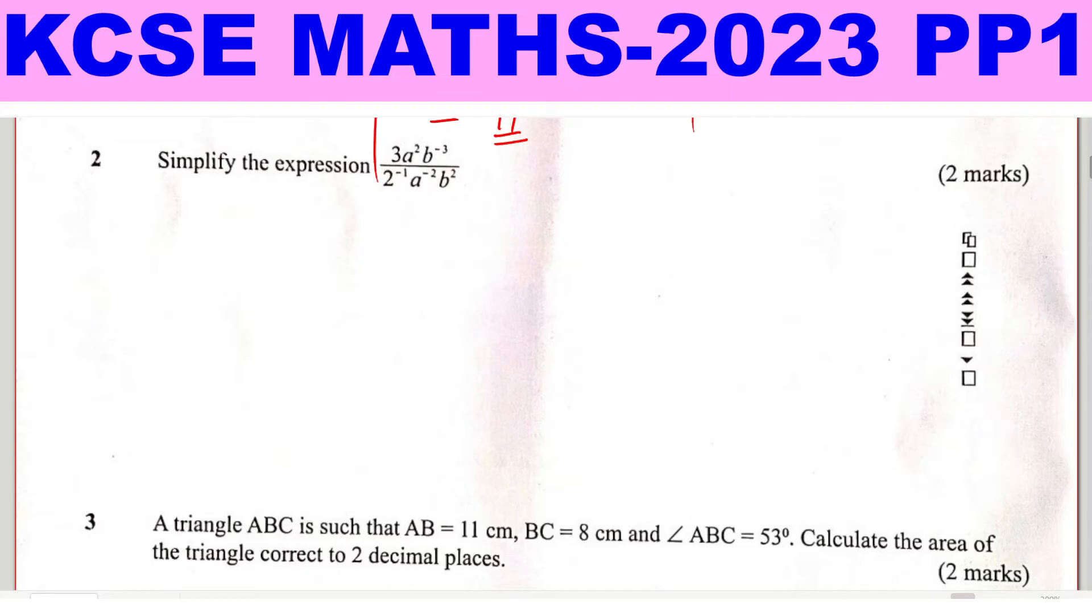And this is how I'm going to split it. For the numerator 3a squared b raised for negative 3, let me split that to have 3 times a squared times b raised for negative 3 like that. Then for the denominator, the same 2 raised for negative 1 times a raised for negative 2 times b squared.